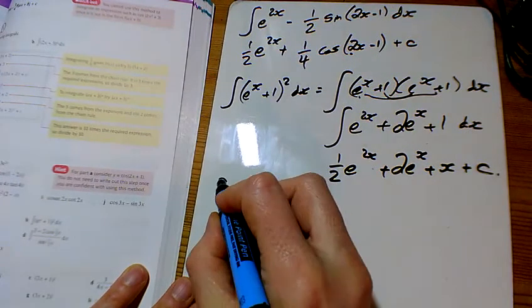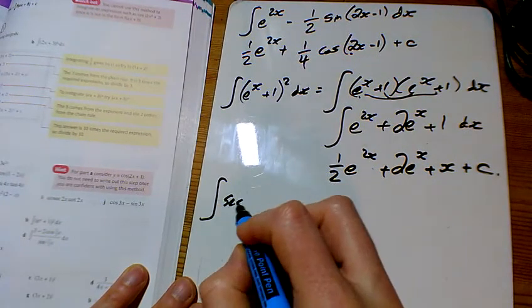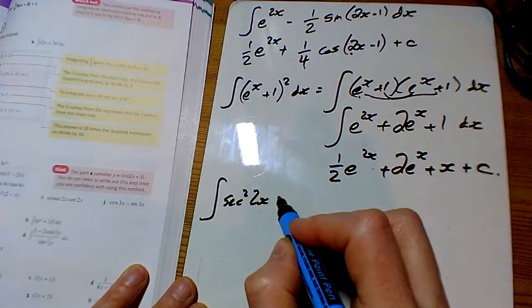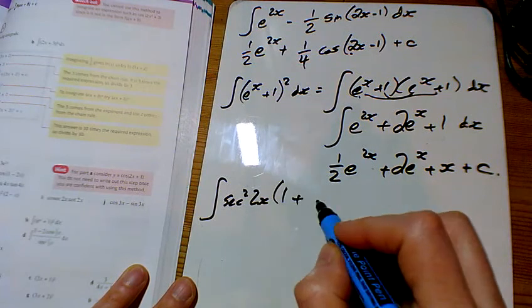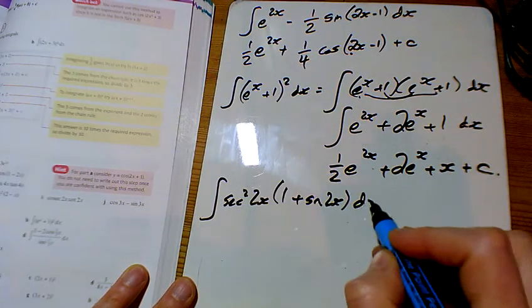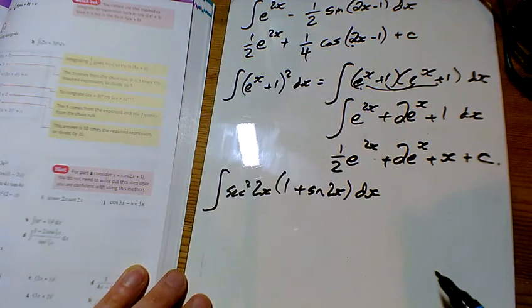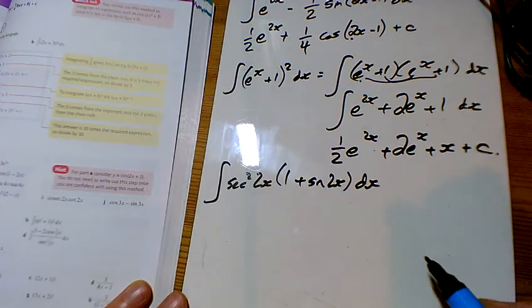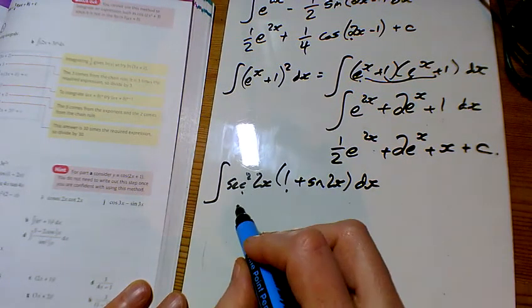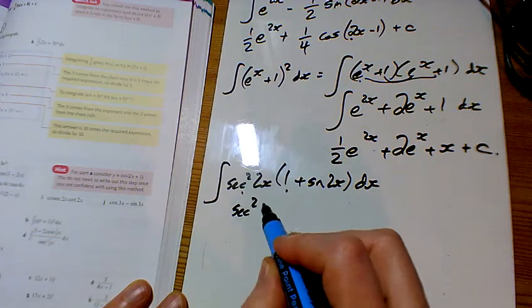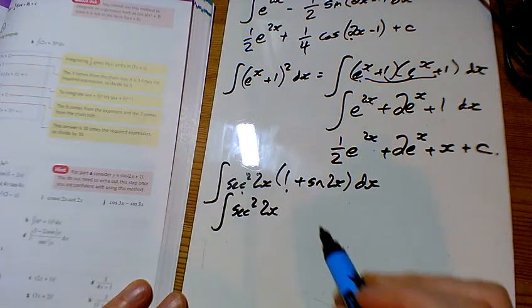Then we might as well do c as well. So sec squared times by 1 plus sine. So we're going to multiply this one out again, similar to what we did in some of the first exercise of this. So sec squared times 1 is going to give us the sec squared. And we know how to integrate that one.